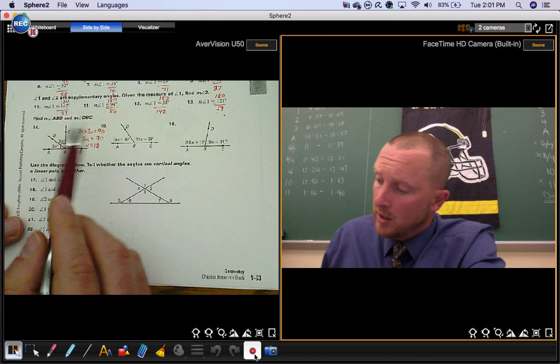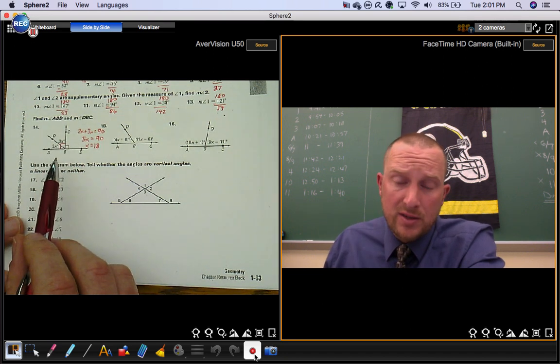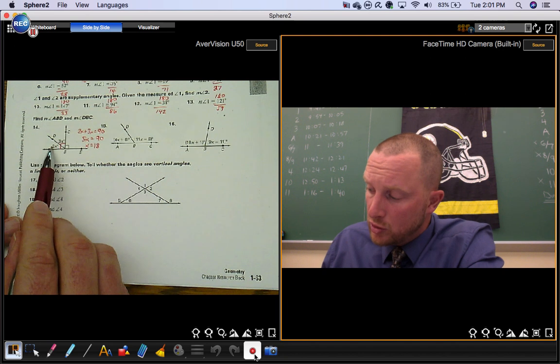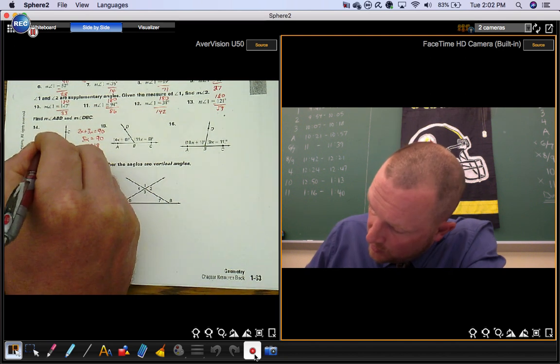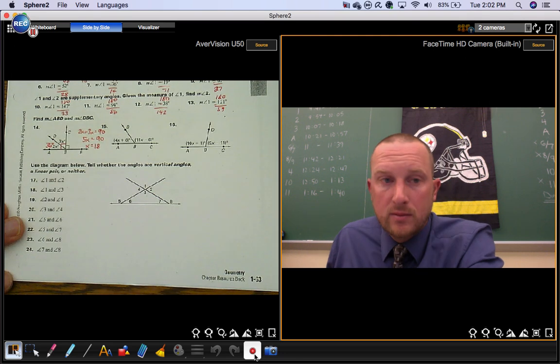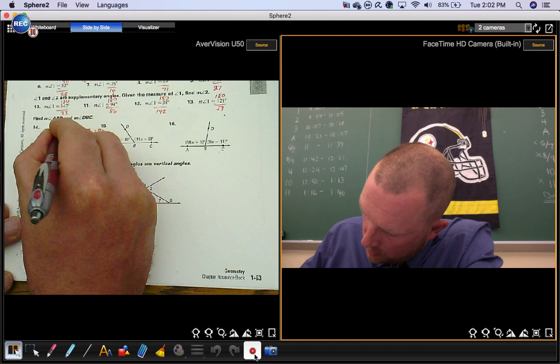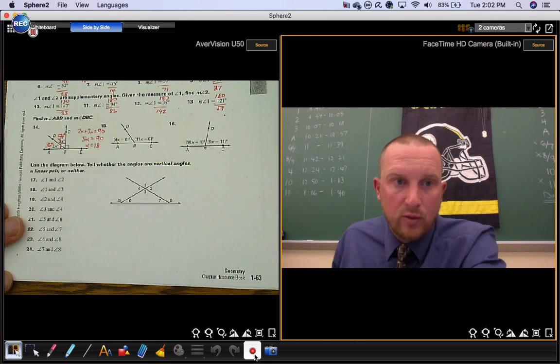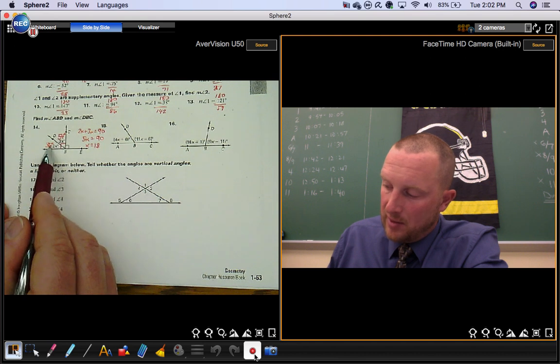Which is good, but they didn't ask you to find x. They asked you to figure out what these angle measures were. So 2 times x, that's 2 times 18, that gives you 36. 3 times 18 gives you 54. Now, you know that you're right because together these add up to 90.